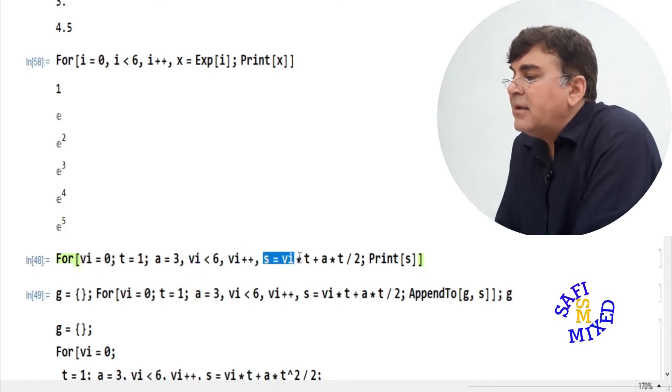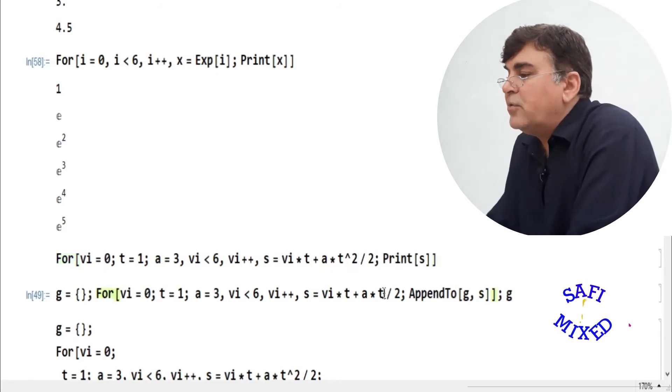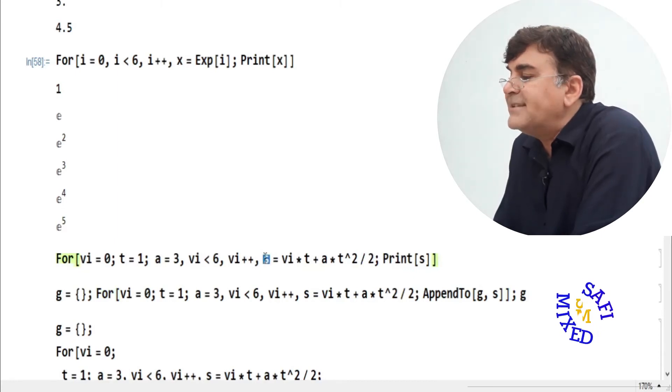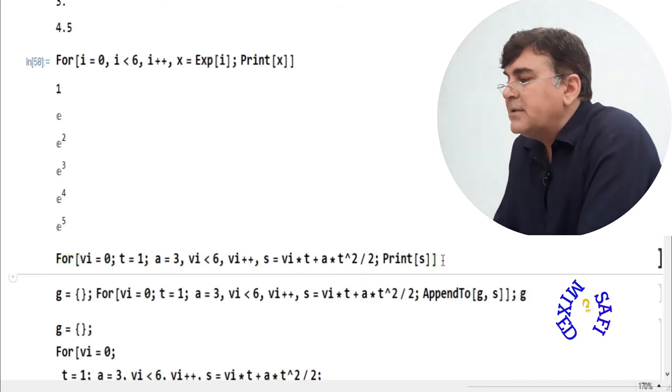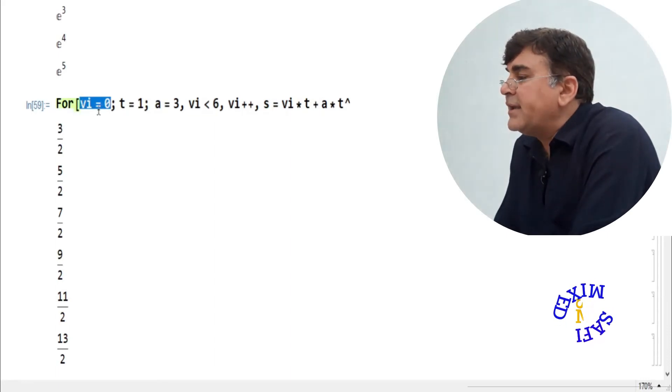Then I define the equation of motion. This should be raised to the power square, and the same I will do over here. So I write S is equal to V_I times T plus half A T squared. The half I am writing at this position. Then I ask Mathematica to print the value of distance S for every value of the initial velocity V_I. So if I run this part, I get the values of distance for each choice of the initial velocity while starting from V_I equal to 0.